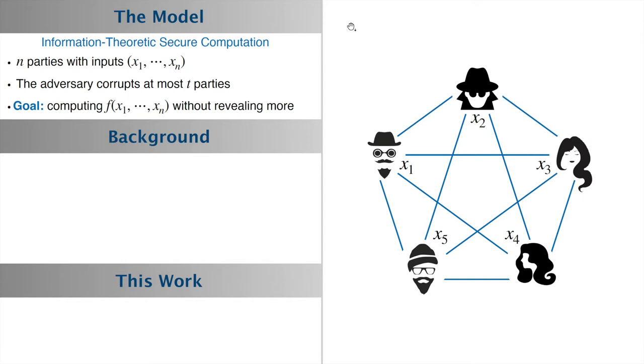The model we look at is information-theoretic secure computation. N parties have inputs x₁ to xₙ, the adversary can corrupt at most t parties, and the goal is computing a public function f without revealing anything more.